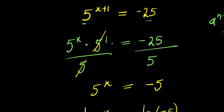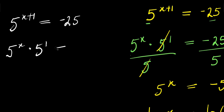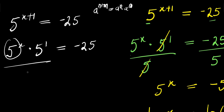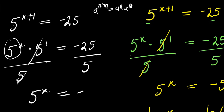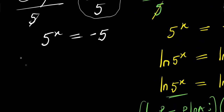So, let's solve it using a different approach. The question remains: 5 power x plus 1 equals negative 25. Applying the same exponent identity, that will be 5 power x times 5 power 1 equals negative 25. Isolating 5 power x, I divide both sides by 5. I have 5 power x equals negative 5, because negative 25 divided by 5 is negative 5. The next step is to apply natural log: natural log of 5 power x equals natural log of negative 5.